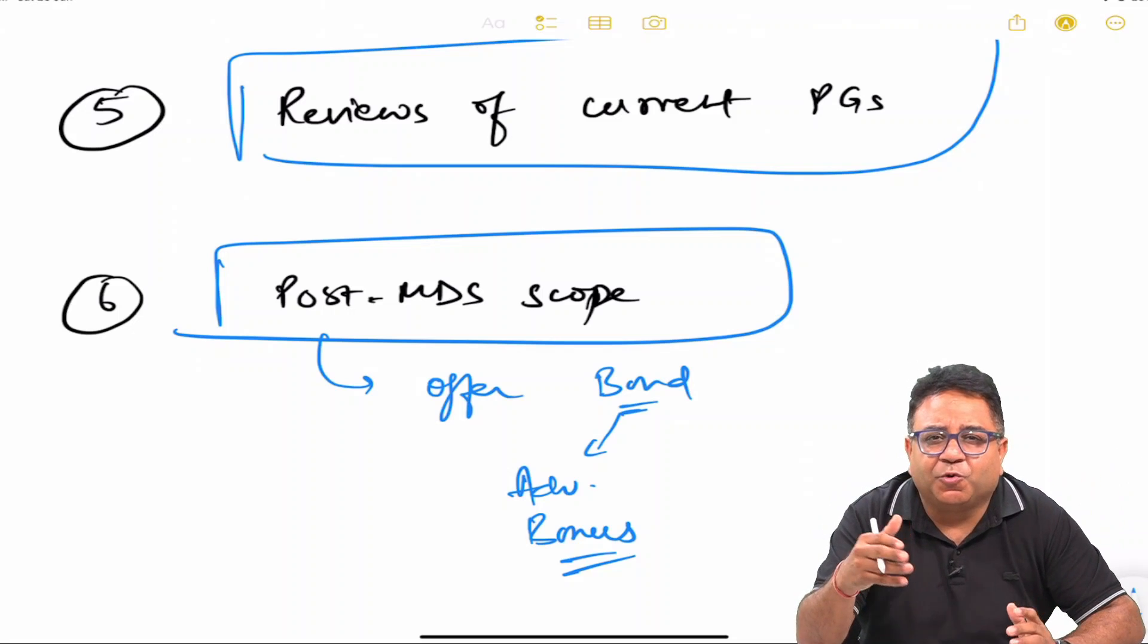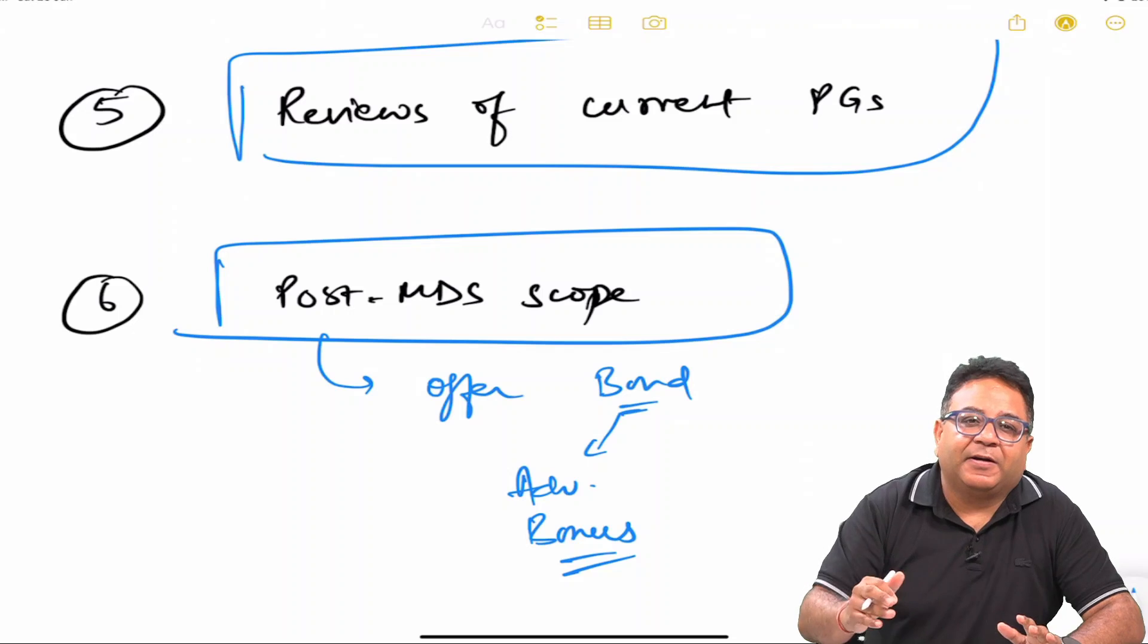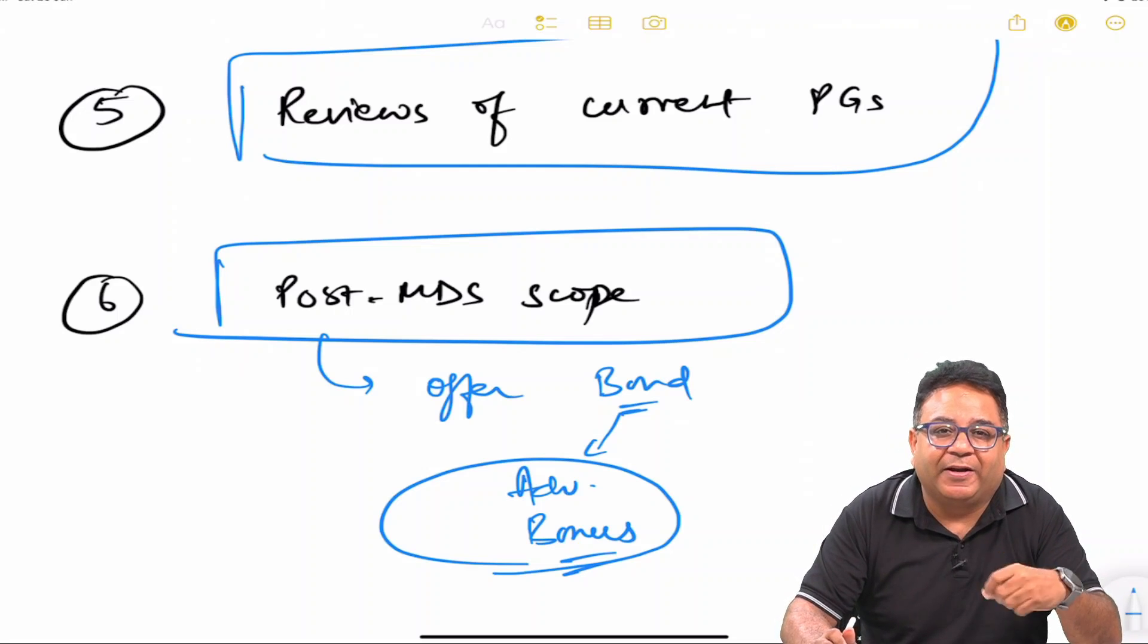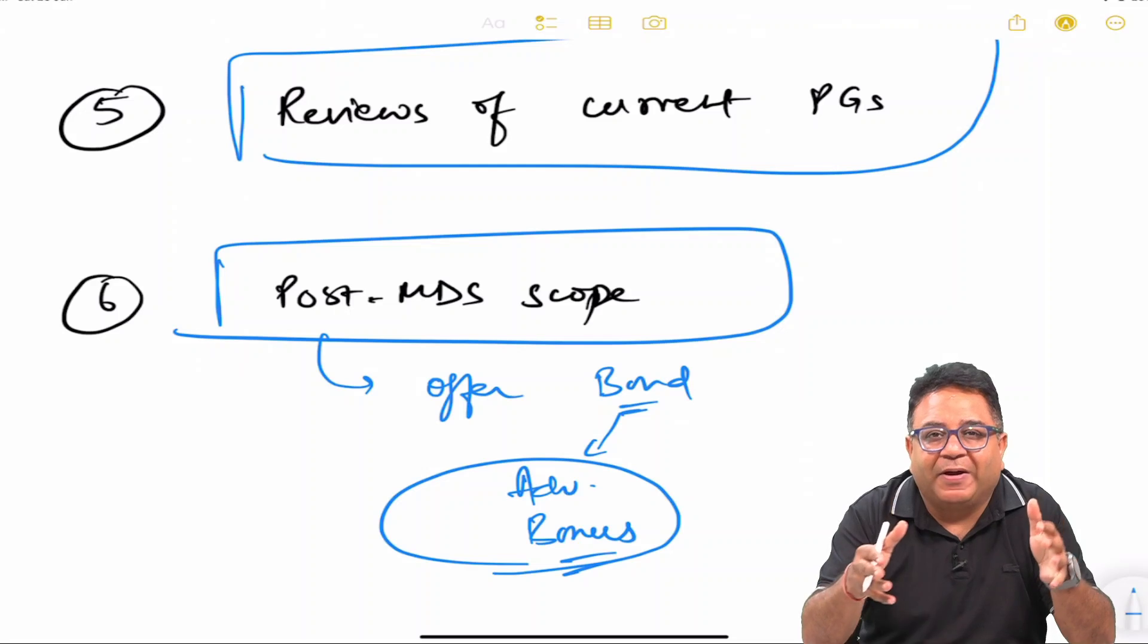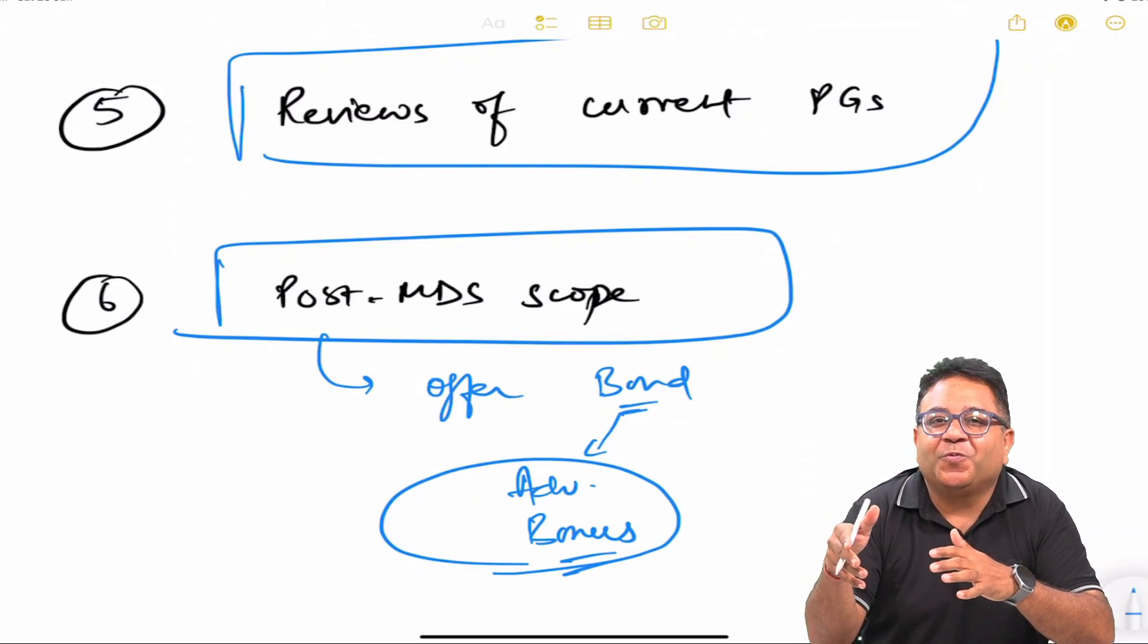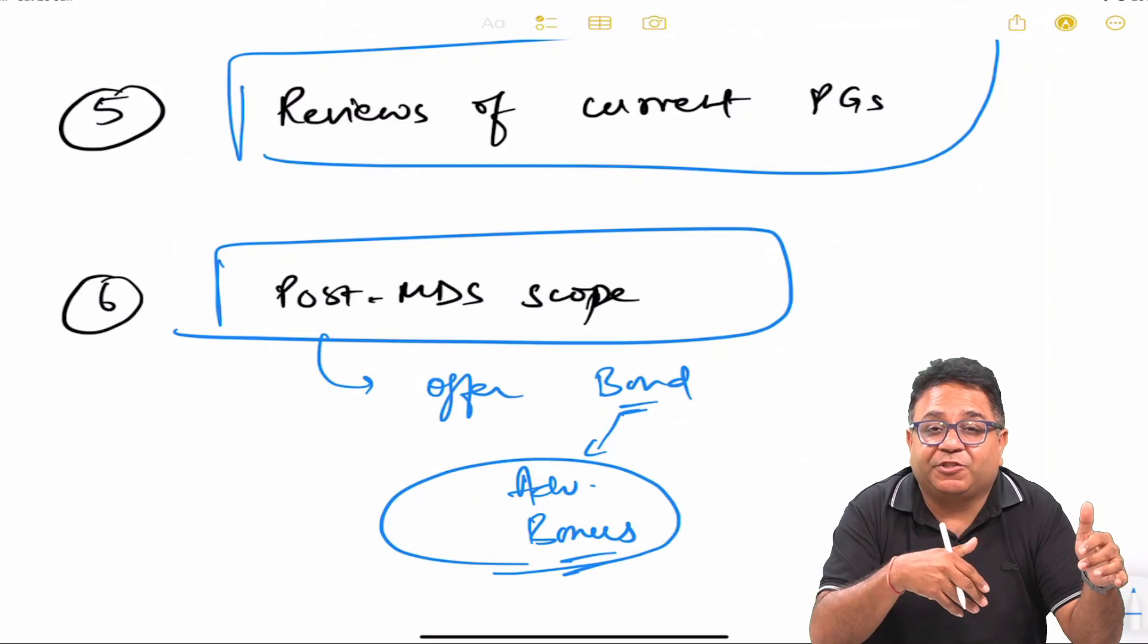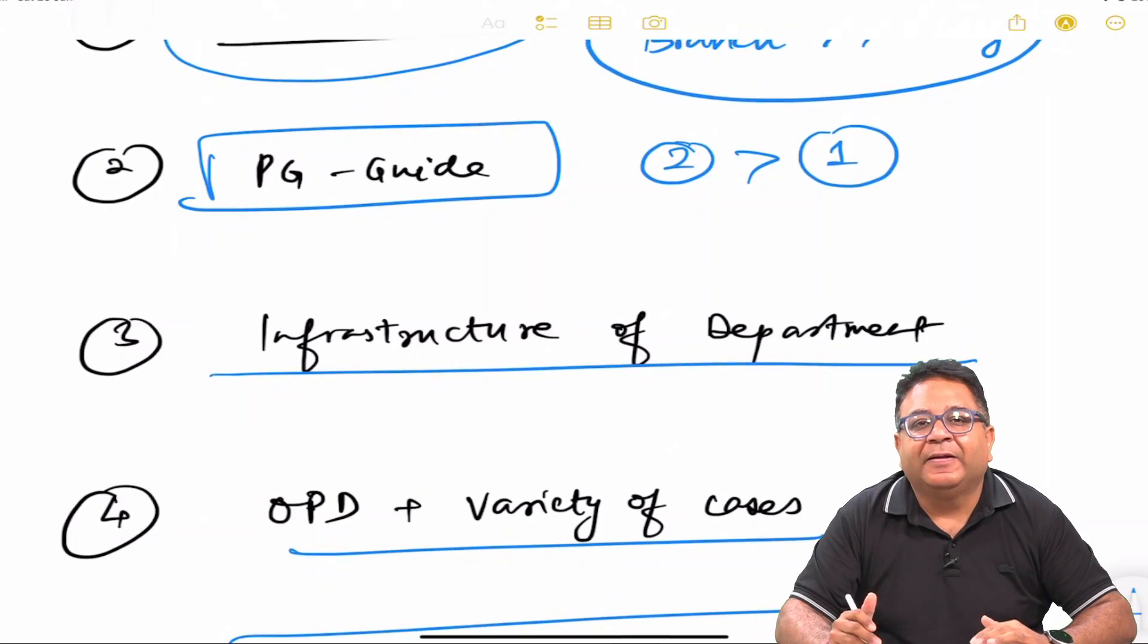Many states do have a compulsion of job one year or two year, so don't take it as a burden—take it as a bonus for initial settlement post-MDS. The SR-ship which you get after that gives you a lot of free hand, research hand, and many things which you might have craved in those three years of doing it but were not allowed to do or were not getting a chance to do. You can easily go on that experimentation modality in that SR-ship period.